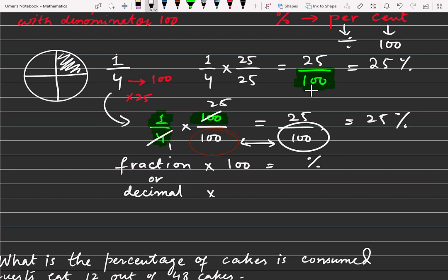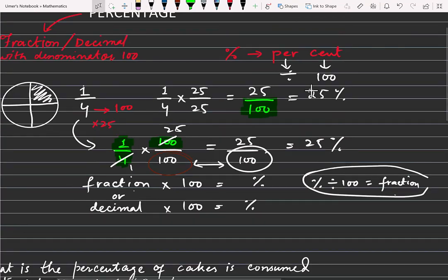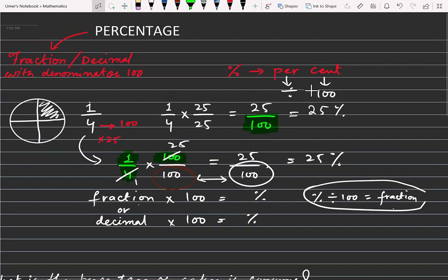Even if it's a decimal, multiply by hundred and we will get percent. And the reverse of this is - if I divide percentage by hundred, it will become a fraction. This rule you should know. Fraction times 100 equals percent, or decimal times 100 equals percent.